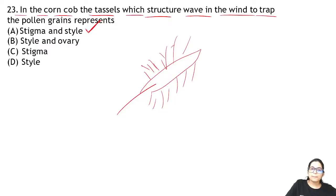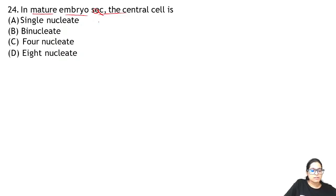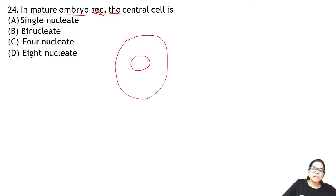Question 24: in a mature embryo sac, what is the central cell? The central cell has two nuclei — that is why it is binucleate. So the central cell is binucleate.